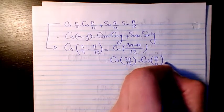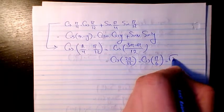It's going to be cosine pi over 6, which is going to be root 3 divided by 2.